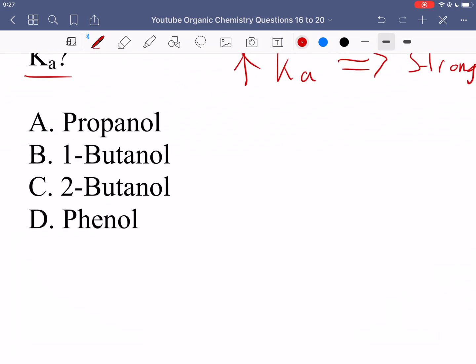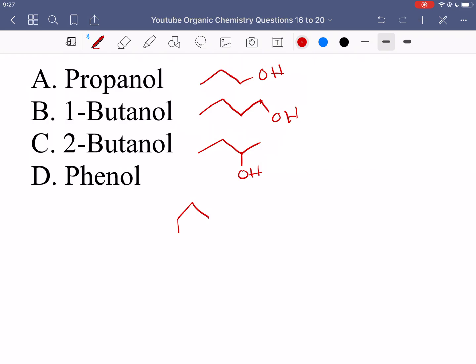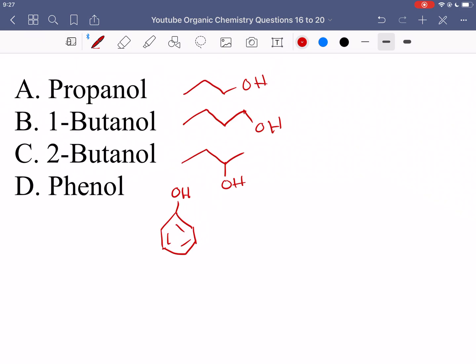Propanol. That would be if I had one, two, three carbons and then an OH. Butanol is one, two, three, four carbons and then an OH. Two butanol is if I had the OH on the second carbon. And finally, phenol looks like this, if I had an aromatic ring and then an OH attached directly to it.